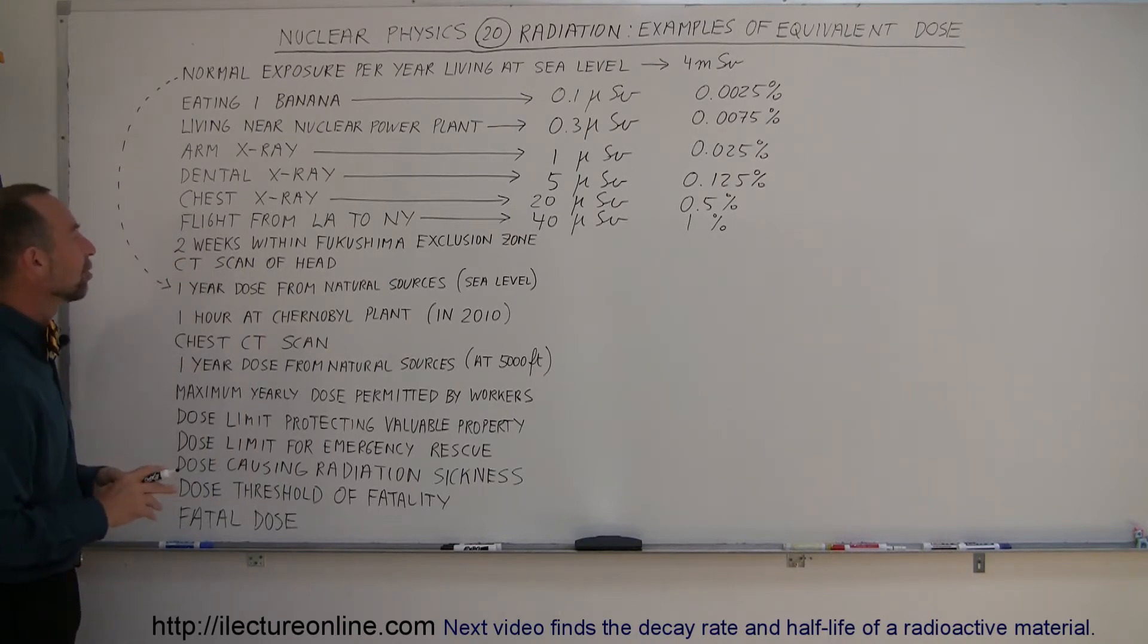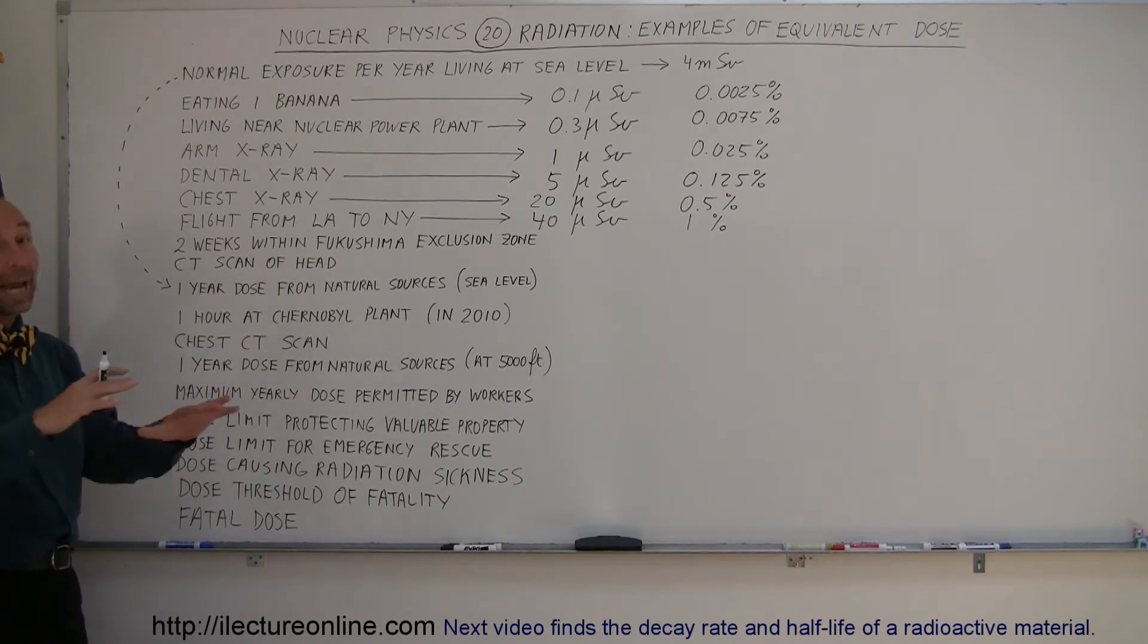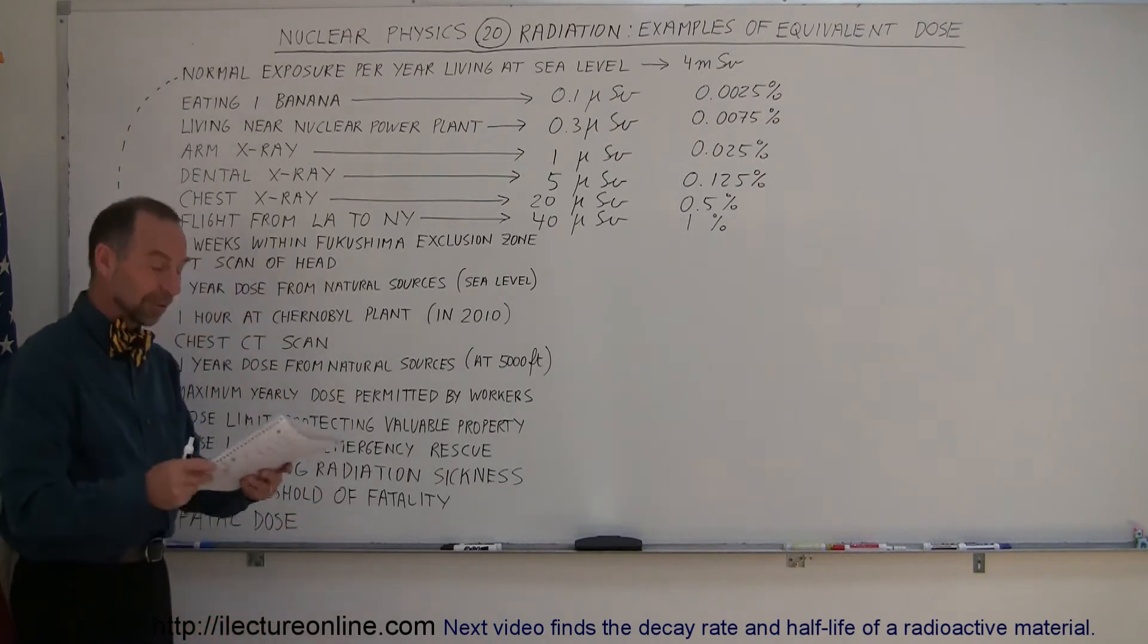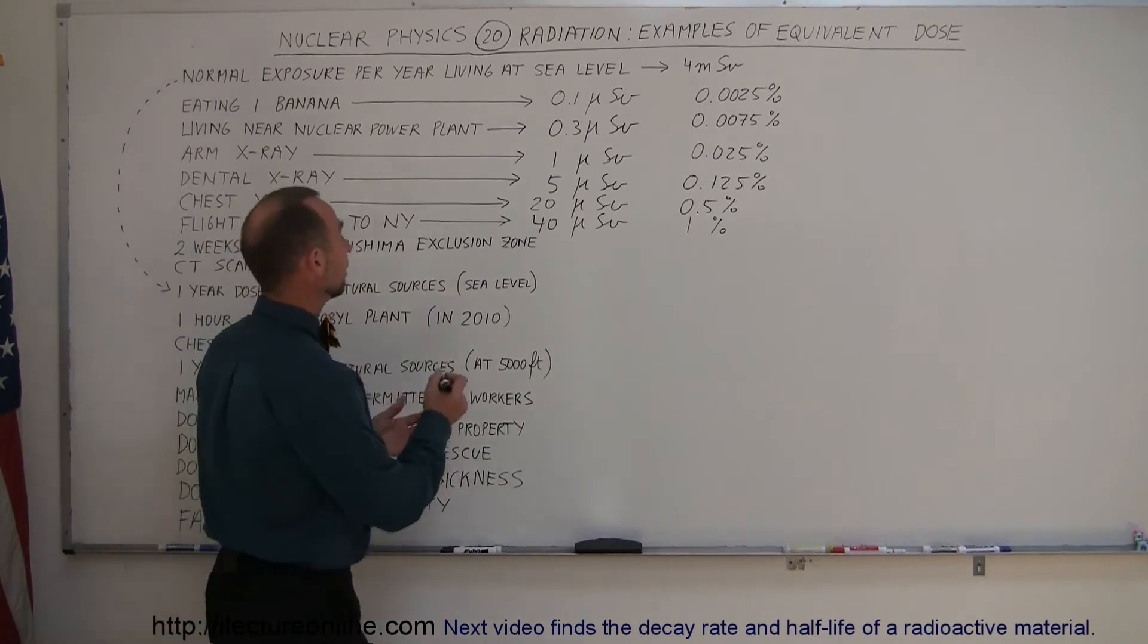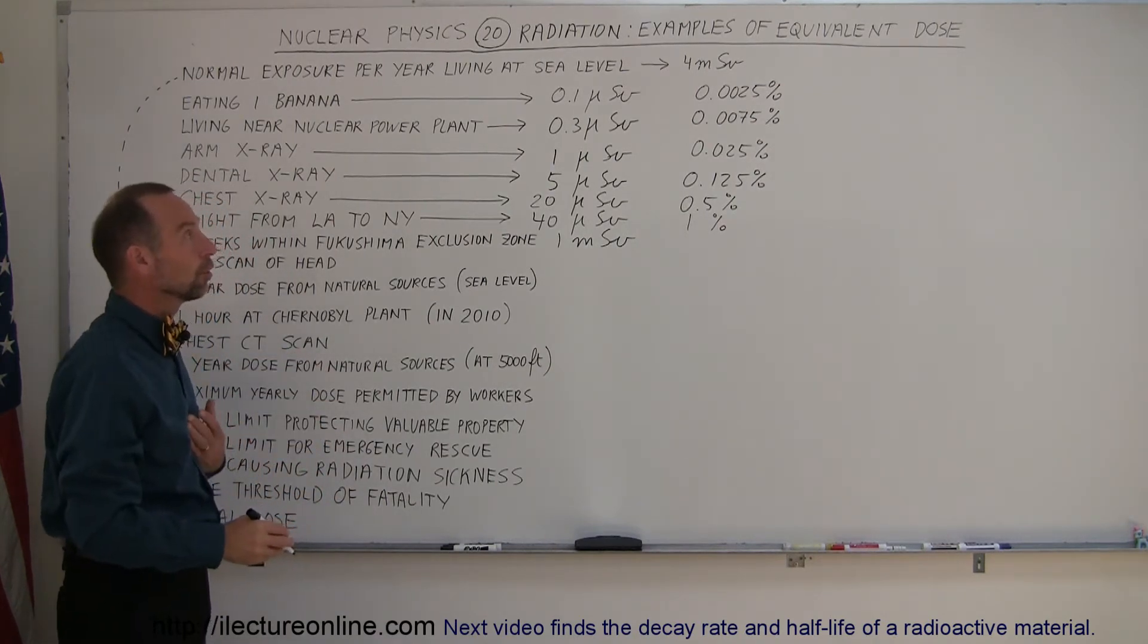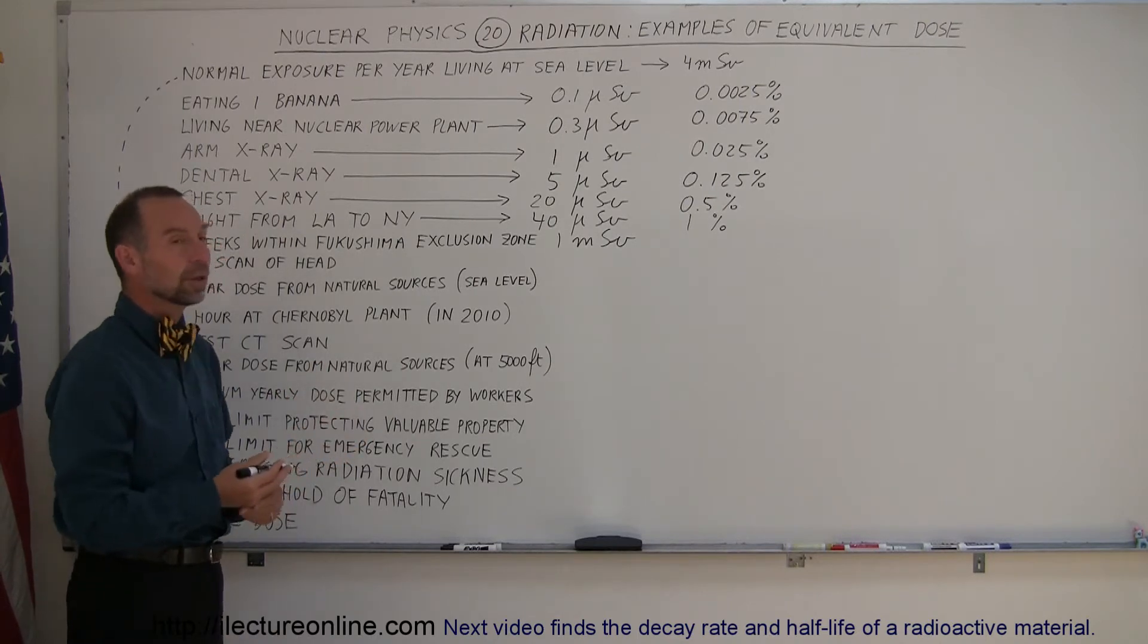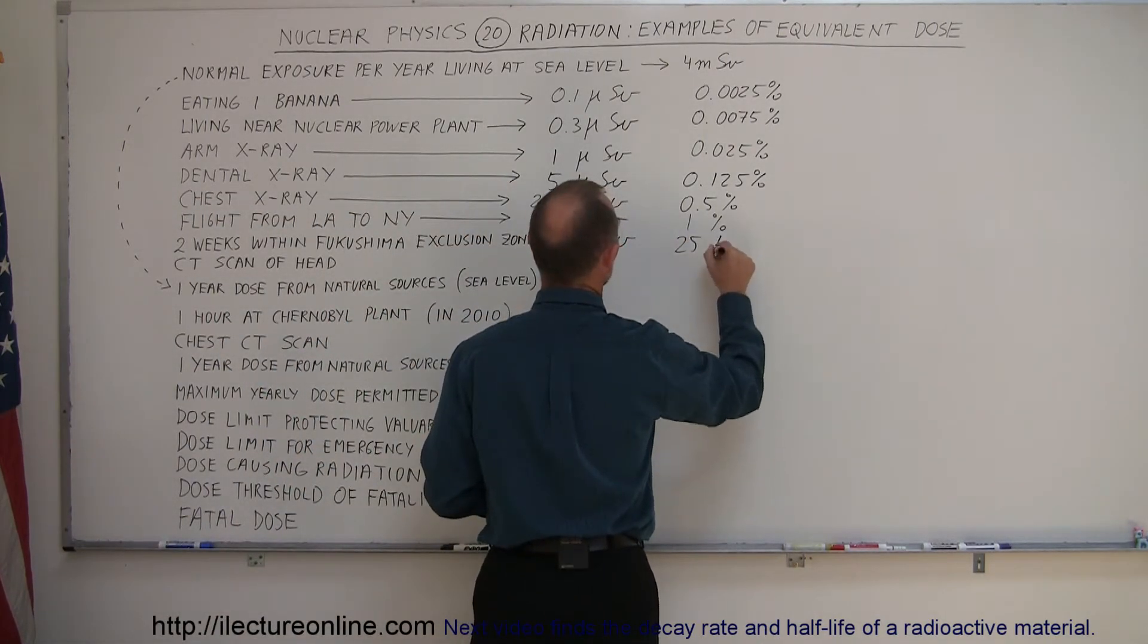What about 2 weeks within the Fukushima exclusion zone? Fukushima is the nuclear power plant that got hit by the tsunami. There was a lot of radiation that came from that power plant, and there was an area where people were asked to leave. If you spend 2 weeks within the Fukushima exclusion zone, that's 1 millisievert. Compare that to what we normally receive in a given year. That is now 25%. So spending 2 weeks within that exclusion zone area would have given you 25% of the normal yearly radiation. It would be fairly safe to stay 2 weeks within that zone, but to live there permanently under these circumstances, probably not a good idea.